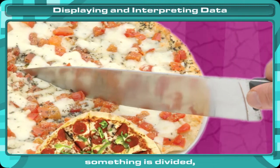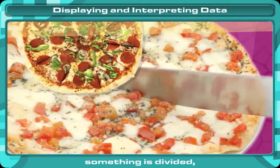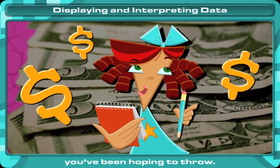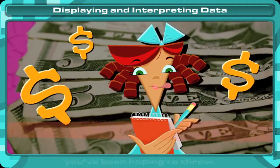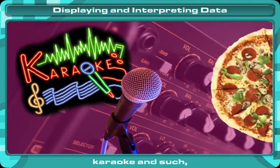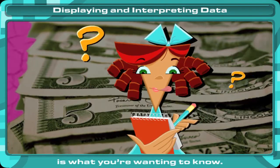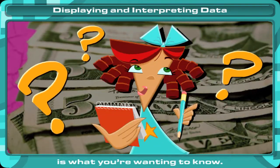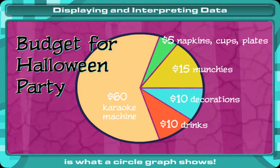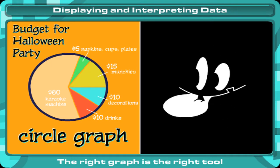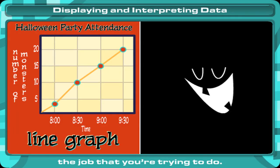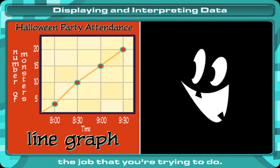Let's say you want to see how something is divided, like the budget for a party you've been hoping to throw — food, drinks and cups, karaoke and such. How your budget breaks down is what you want to know, and how things are broken down is what a circle graph shows. The right graph is the right tool for the job that you're trying to do.